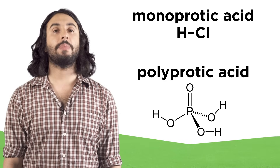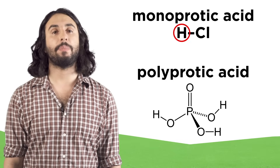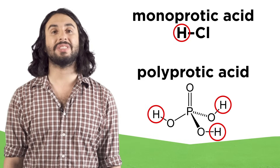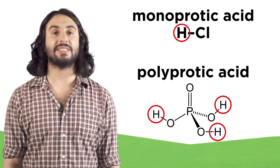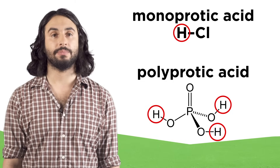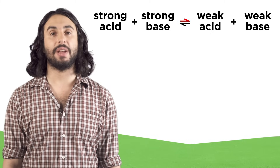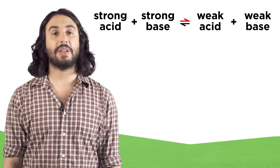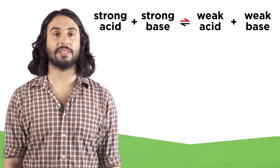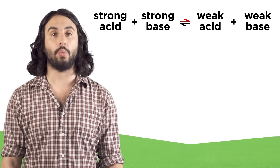There can be monoprotic acids, which can only lose one proton, or polyprotic acids, which can lose several. Polyprotic acids become less acidic with each deprotonation. In an acid-base equilibrium, the side with the weaker acid-base pair will always be favored, because the stronger acid or base will have a greater tendency to react and generate the weaker species.